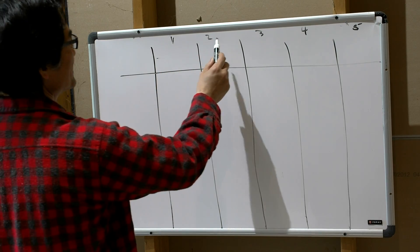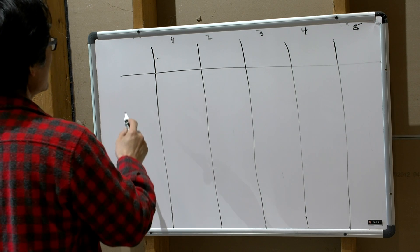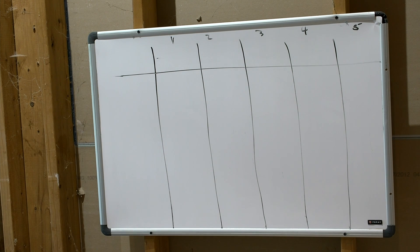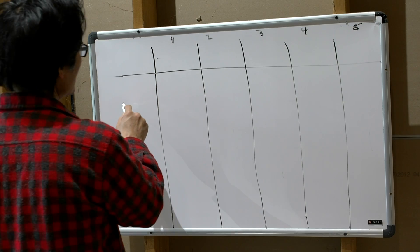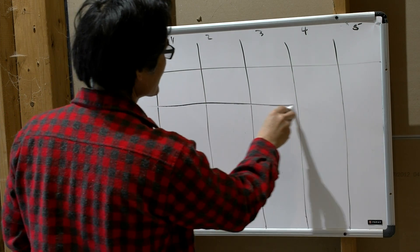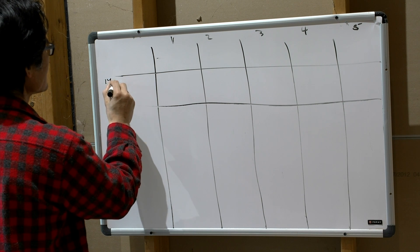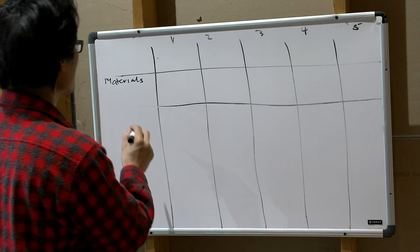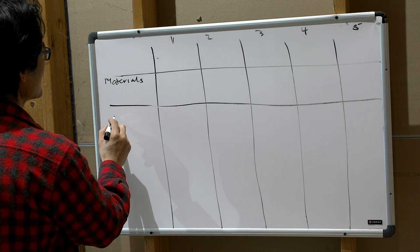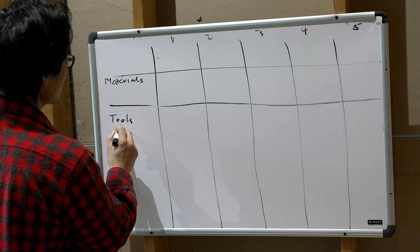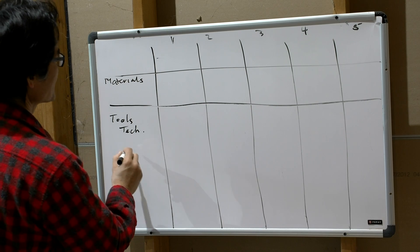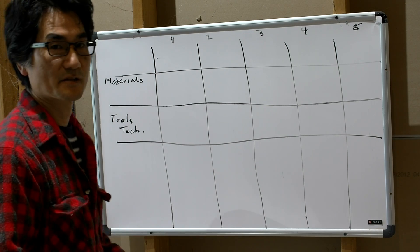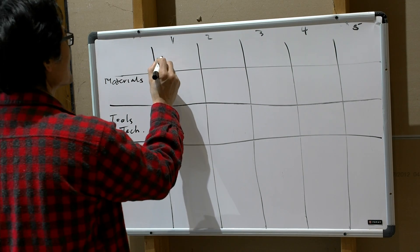There are five categories and I want to create a row describing the materials generally that each process deals with, tools, techniques. Let's start with that and see where this goes. Five categories.